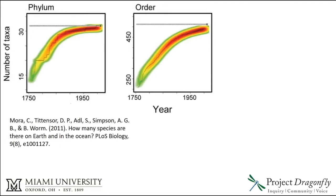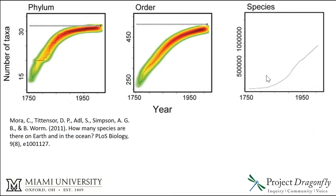In an article by Mora et al., 2011, they tried to address the question of how many species there are on Earth and in the ocean. They noted that the number of taxa at the phylum level has started to level off, showing that curve and an asymptote from 1750 to the present. The same pattern appears at the level of order. However, when they looked at the number of species described to science, they saw a linear increase over the last century, so it's not easily possible to estimate total species richness using that alone.